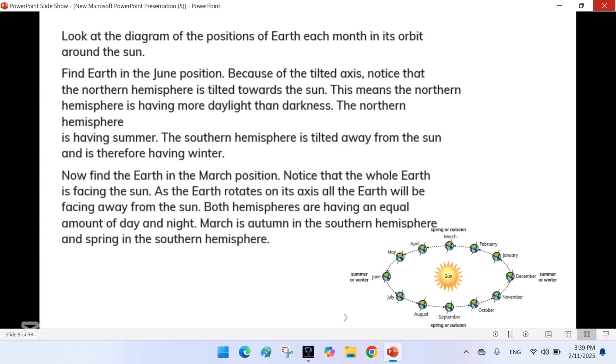Look at the diagram of the positions of earth each month in its orbit around the sun. Find earth in the June position. Because of the tilted axis, notice that the northern hemisphere is tilted towards the sun. This means the northern hemisphere is having more daylight than darkness. The northern hemisphere is having summer. The southern hemisphere is tilted away from the sun and is therefore having winter.